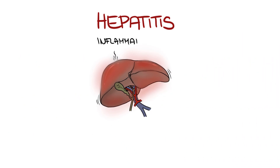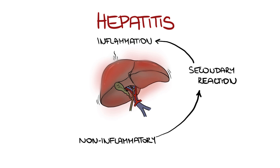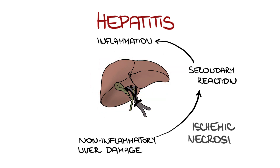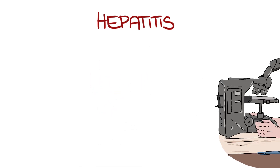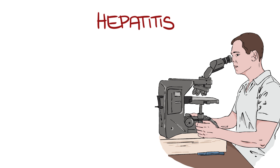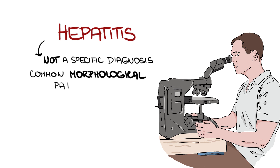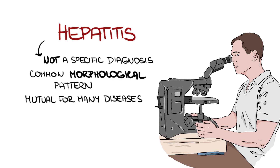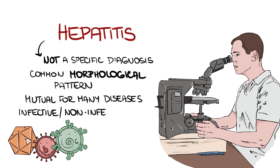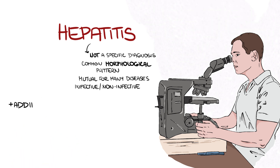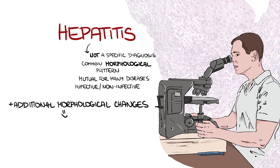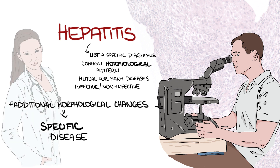Apart from that, inflammation often comes as a secondary reaction to previously non-inflammatory liver damage, such as ischemic necrosis. Thus, from a morphological or microscopical point of view, the term hepatitis is not a specific diagnosis but a common morphological pattern, mutual for many diseases, both infective and non-infective. Sometimes we can see additional morphological changes which can point us to a specific disease. However, the final diagnosis is impossible to reach without clinical data and proper clinical setting.